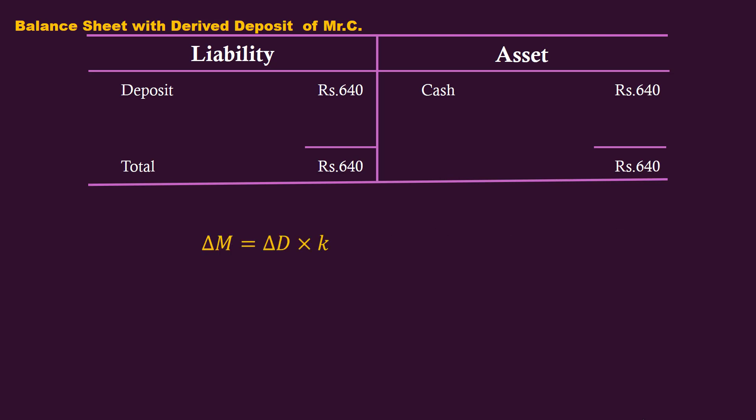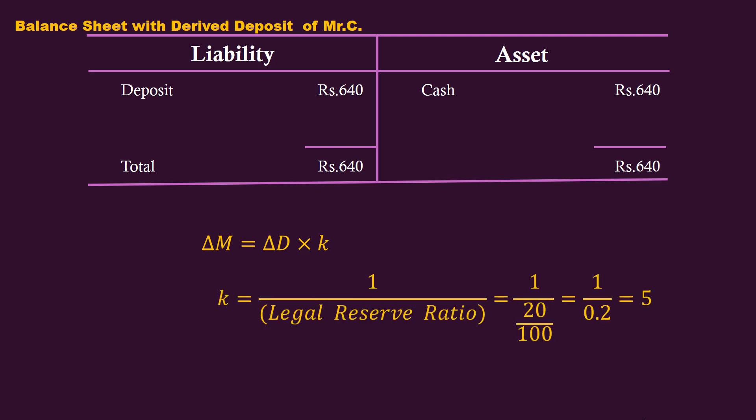The concept of the money multiplier K helps us find the change in money supply (delta M) caused by a change in deposit (delta D). K equals 1 over the legal reserve ratio. In our example, the legal reserve ratio is 20%, so K equals 1 divided by 0.2, which equals 5. Therefore, the change in money supply (delta M) is 5 times the primary deposit of 1000 rupees, meaning the money supply in the economy increases to 5000 rupees. With the help of the money multiplier, we can directly calculate the change in money supply due to a change in deposit.